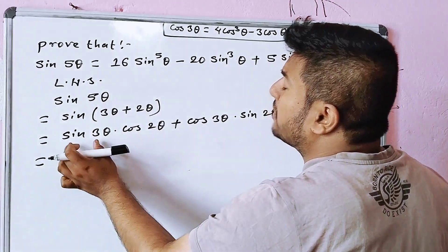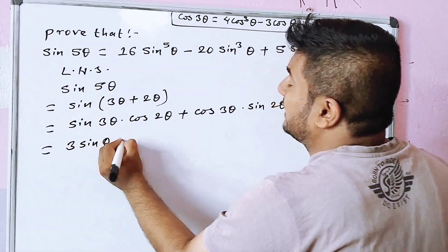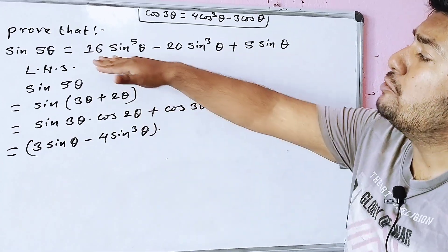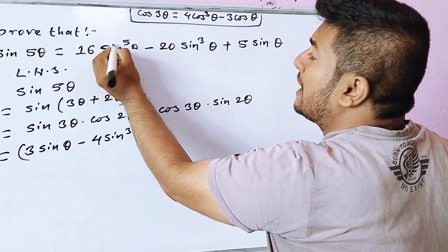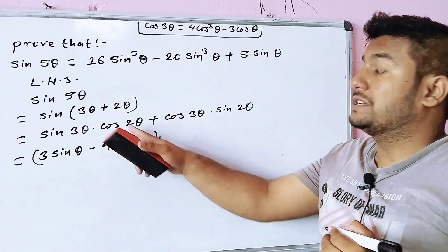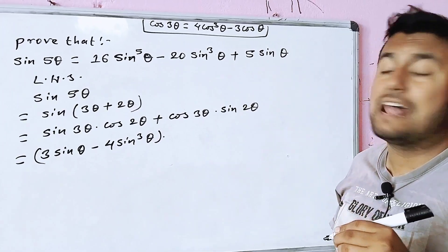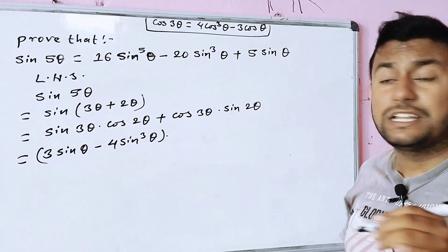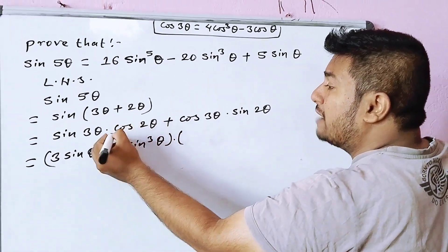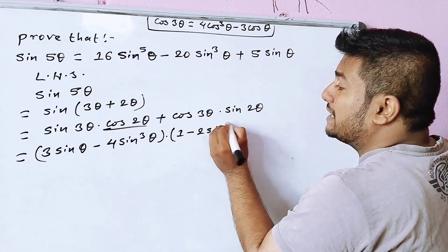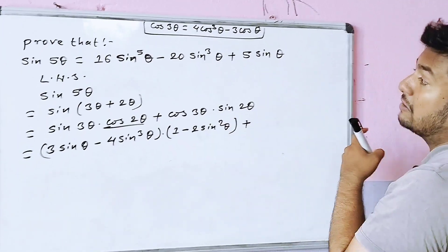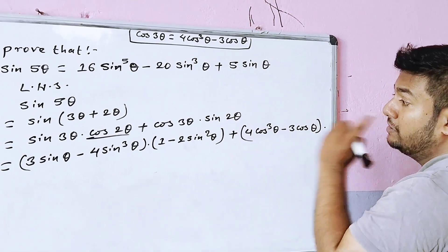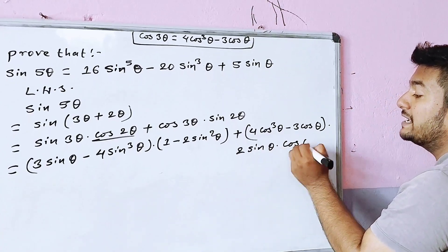We will use the known formulas. The formula for sin 3θ is 3sinθ − 4sin³θ. For cos 3θ, we use 4cos³θ − 3cosθ. For sin 2θ, we use 2sinθ cosθ. And for cos 2θ, we use 1 − 2sin²θ.